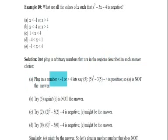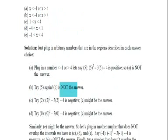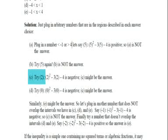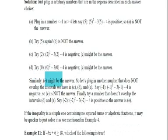Just plug in some arbitrary values that are in the regions described in each answer choice. Let's plug in a number which is less than minus 1 or greater than 4, let's say 5. 5 squared minus 3 times 5 minus 4 is positive, so A is not the answer. Now try 5 again. B is not the answer again. Now try 2. So 2 squared minus 3 times 2 minus 4, so C might be an answer. And you put 0. So 0 squared minus 3 times 0 minus 4 is negative. So C can be an answer. Similarly, E might be the answer.